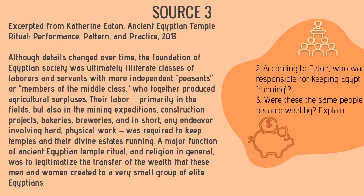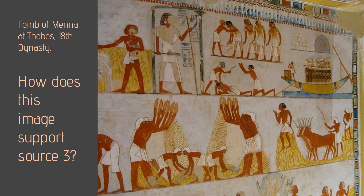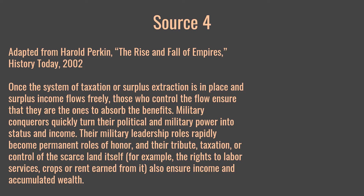On your worksheet, questions two and three ask: according to Eaton, who was responsible for keeping Egypt running? And were these the same people that became wealthy? Pause the video and answer those two questions. This is a piece of art on the tomb of Mena at Thebes in the 18th dynasty — look at this image closely and tell me how it supports Source 3.